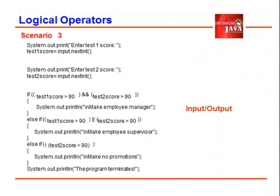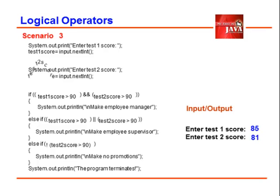We proceed now on scenario three. Prompt again to enter score one, we entered 85. We store score one as 85. Prompt again to enter score two, we enter 81. 81 is stored on test two score. We validate test one score greater than 90, is false. So the entire condition is false, we proceed to the next line.